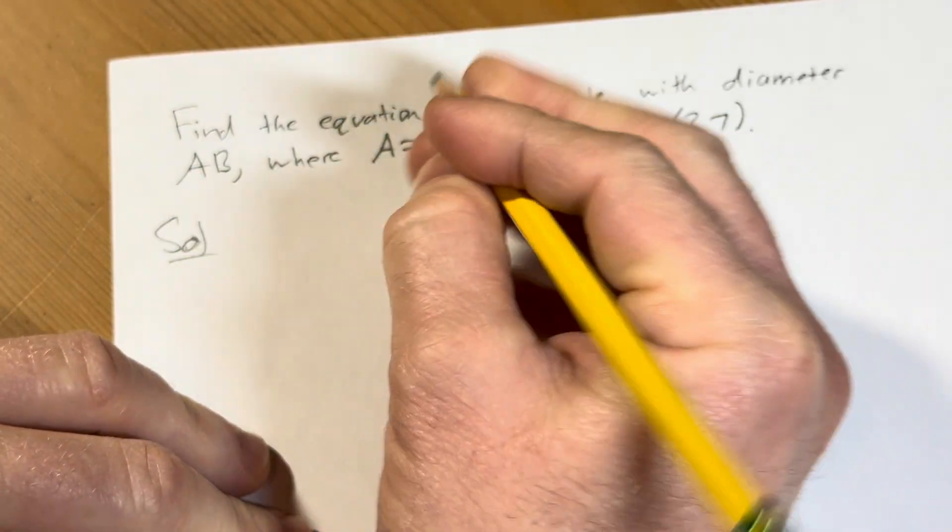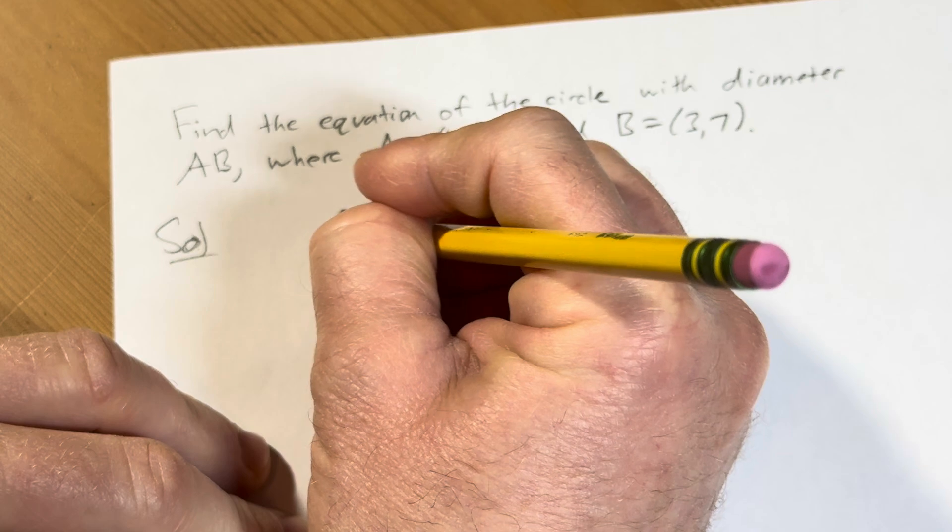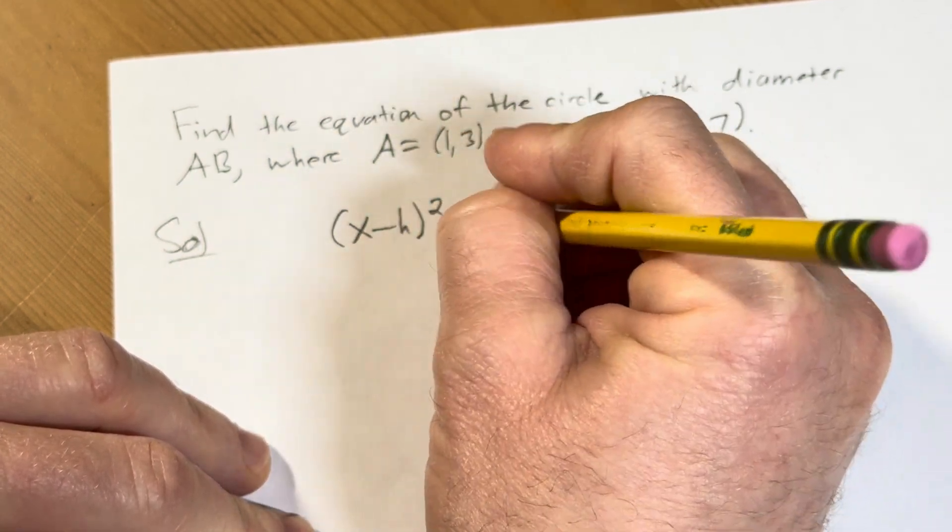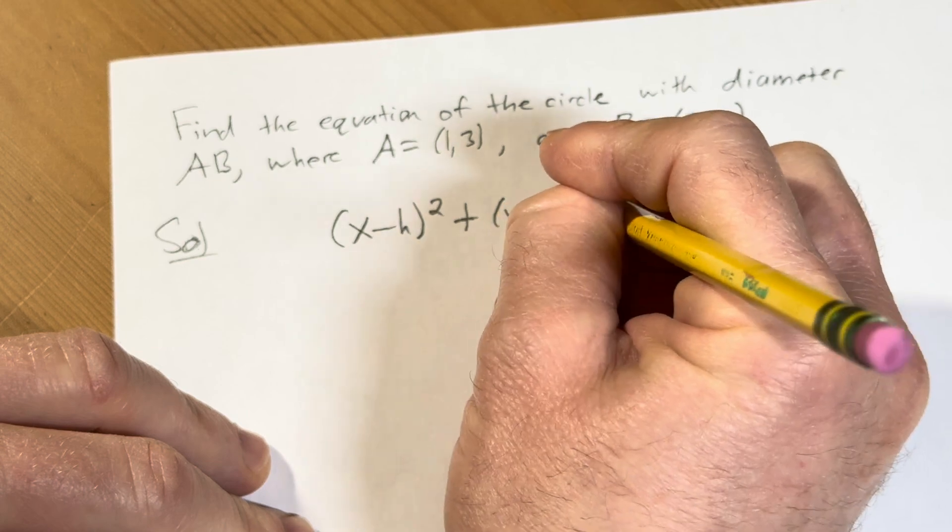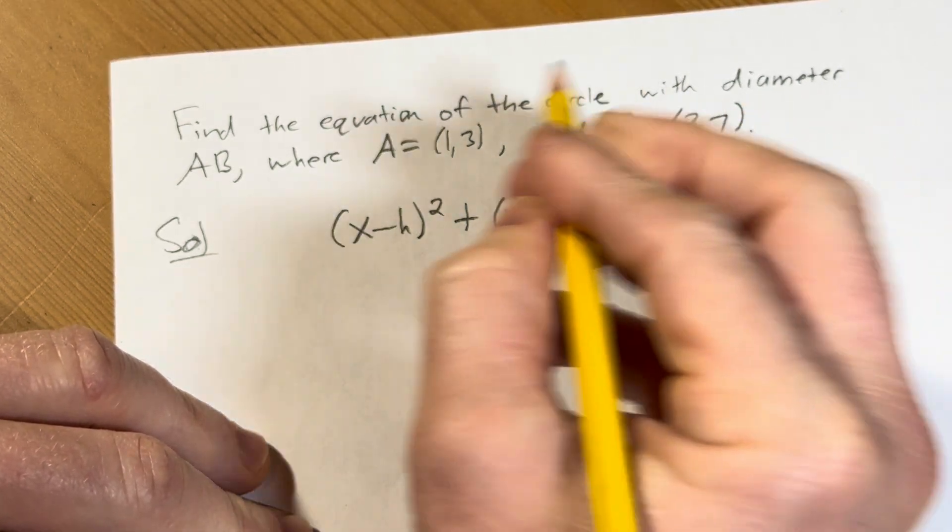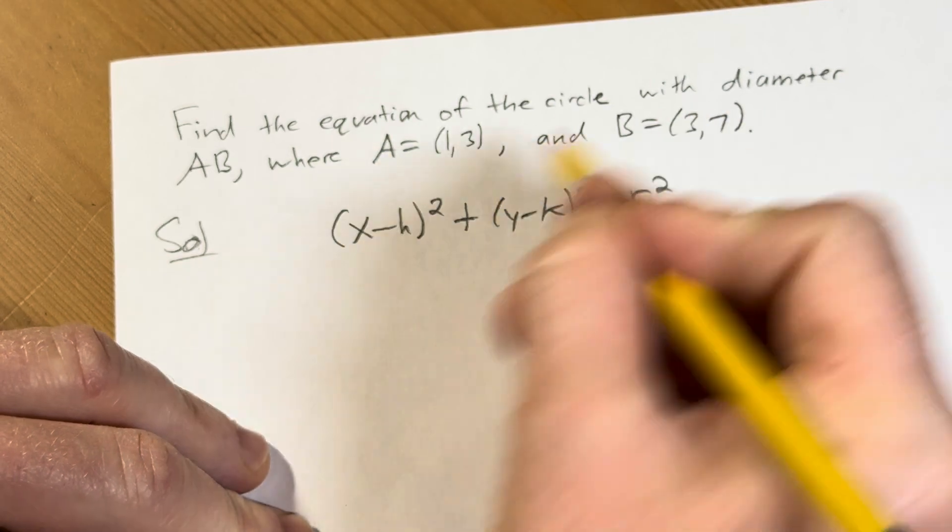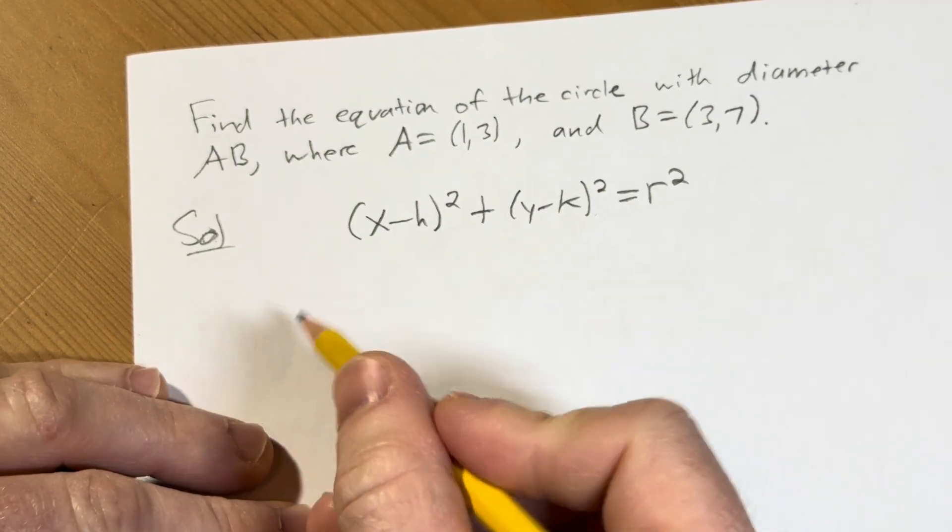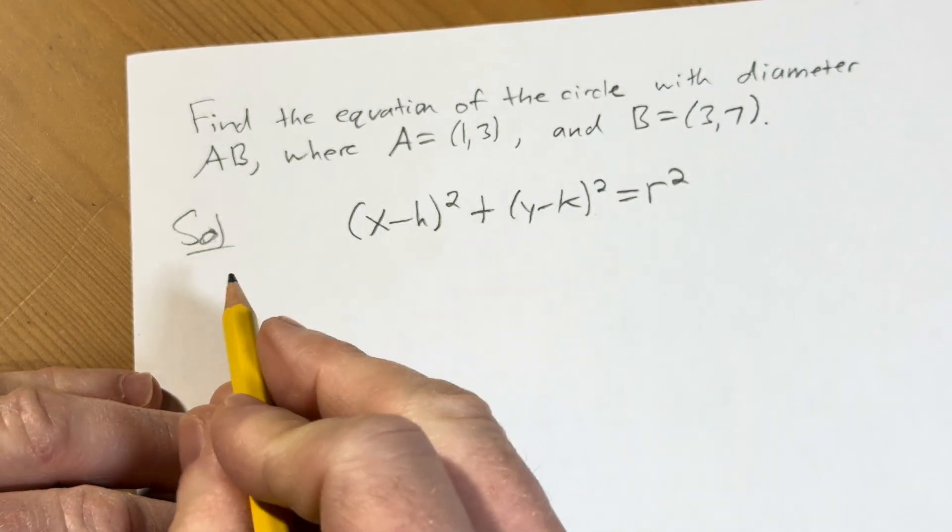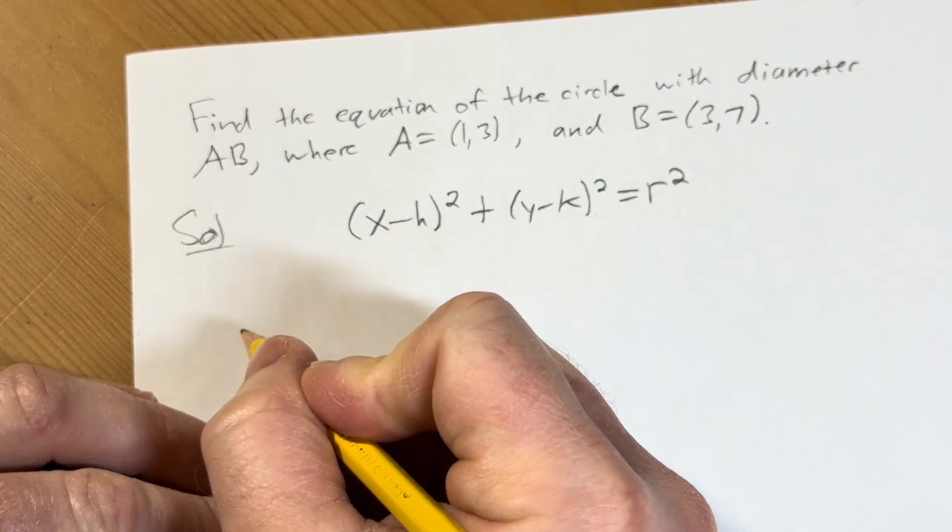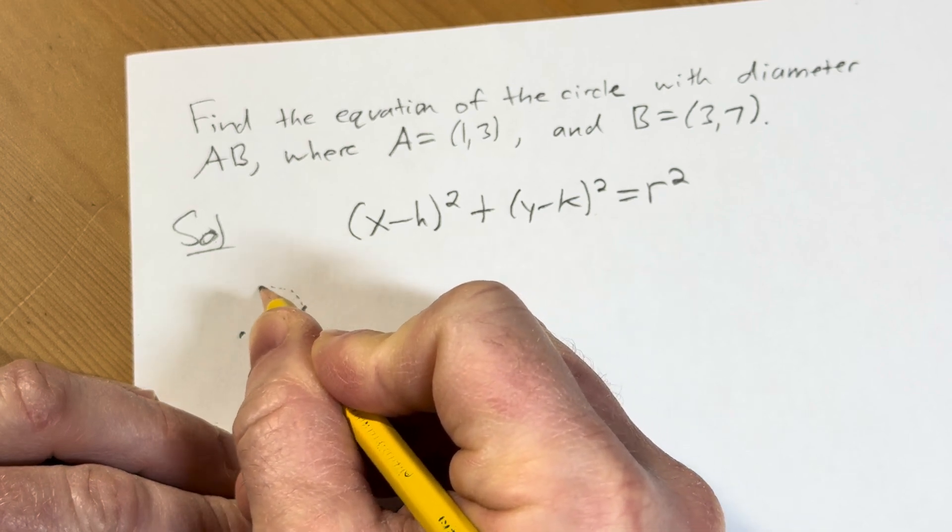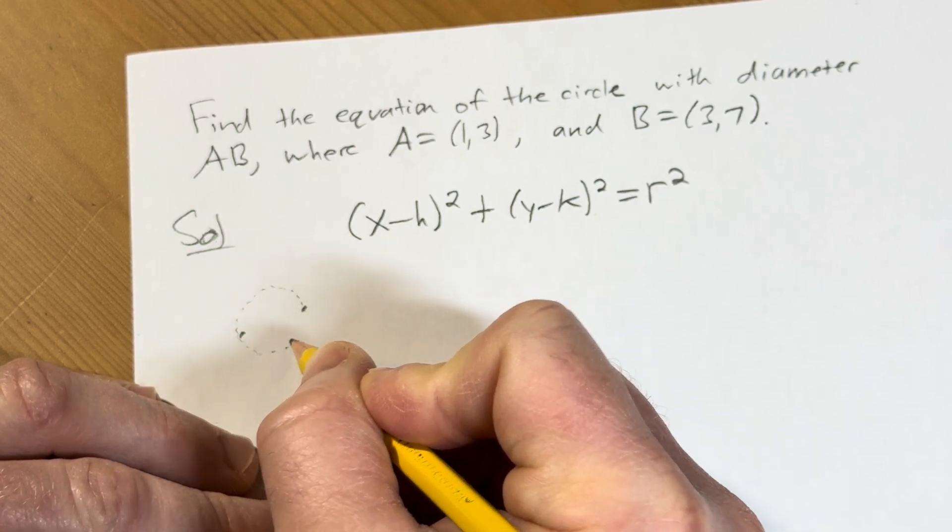So the equation of a circle is (x - h)² + (y - k)² = r². Okay, so we have these two points here. So if we draw a little picture, this might make it a little bit easier for you to understand. Say this is A, say this is B, and here's our circle.